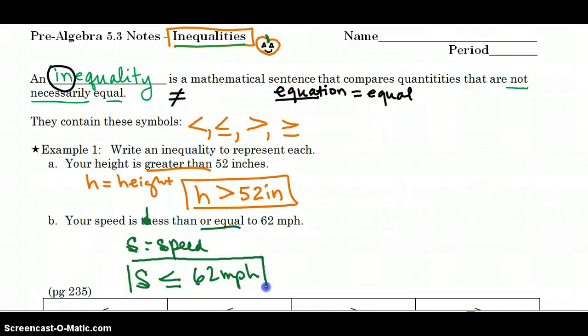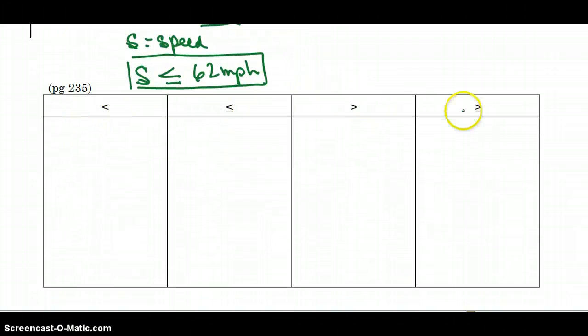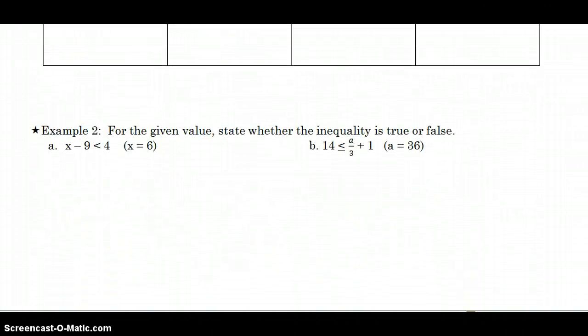So when you translate that sentence into an inequality statement, you say S less than or equal to 62 miles per hour. There are a lot of terms or words that will signify which symbol to use. We're going to talk about those in class tomorrow. So bring your book and we'll look at page 235 together.